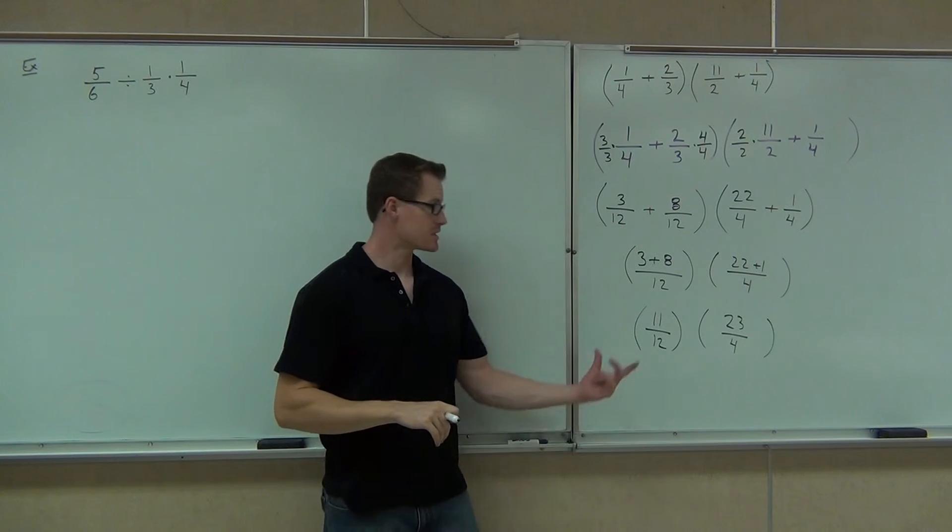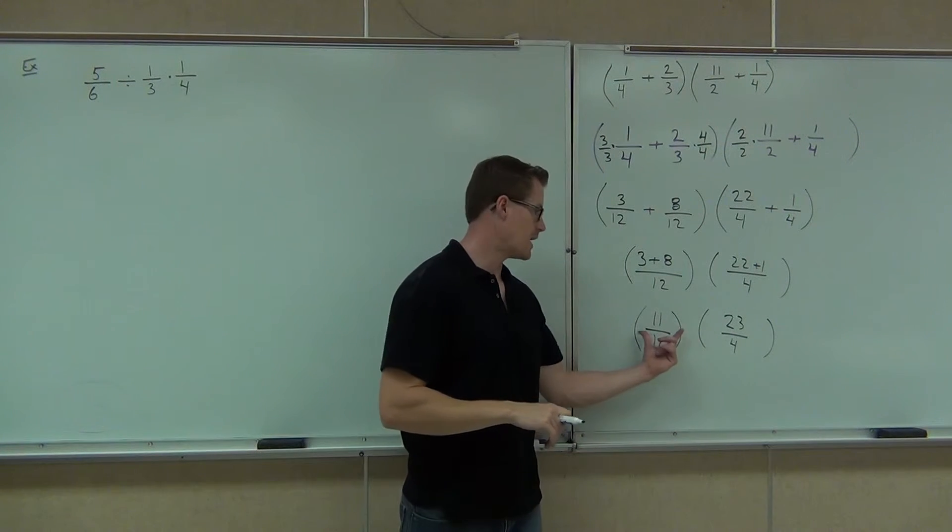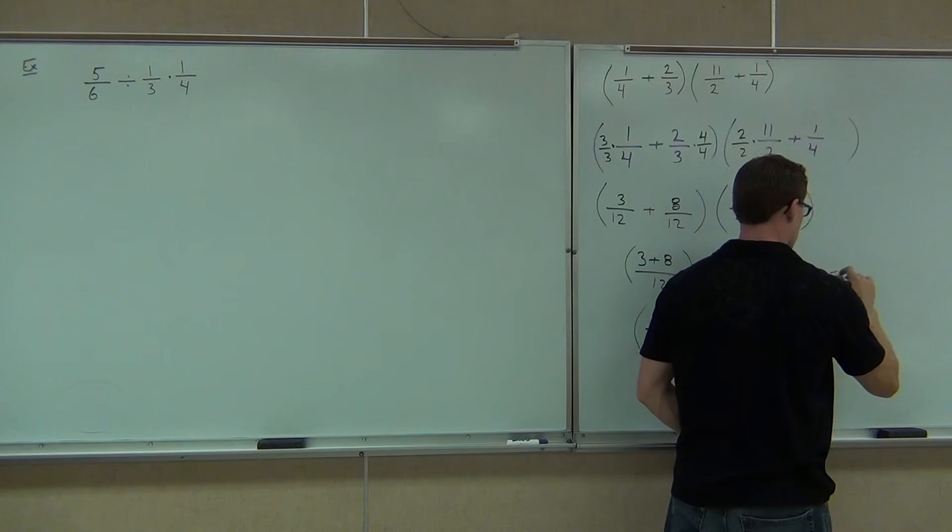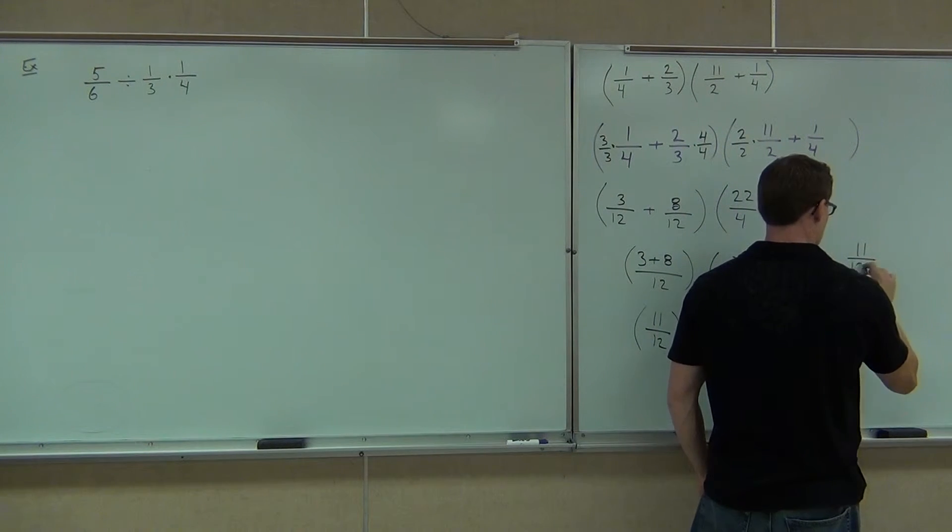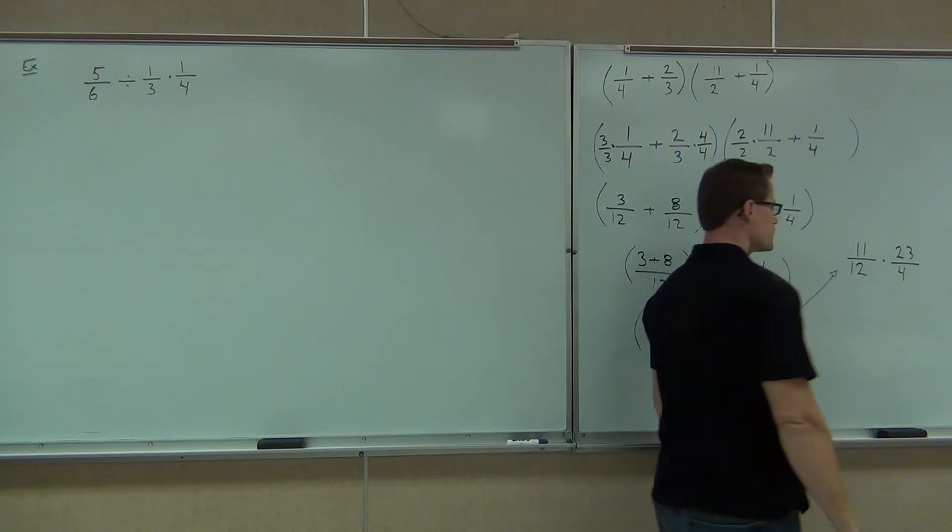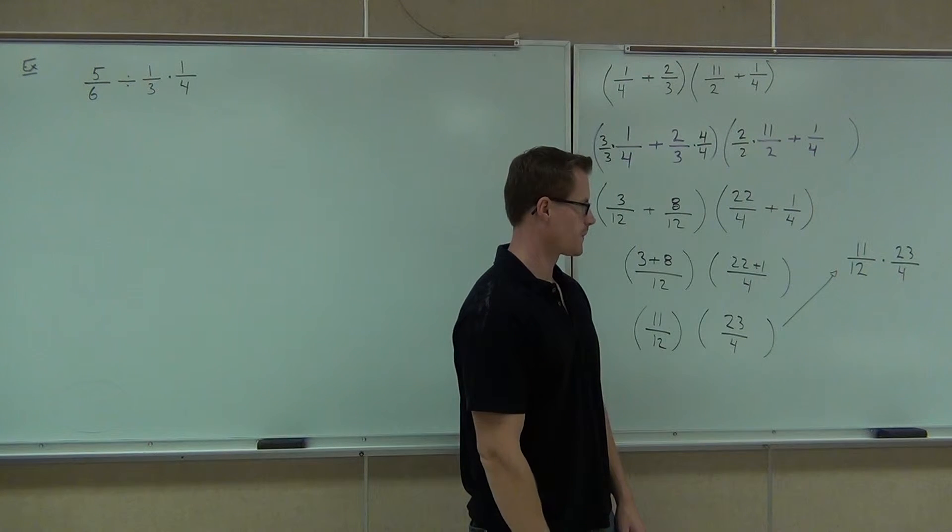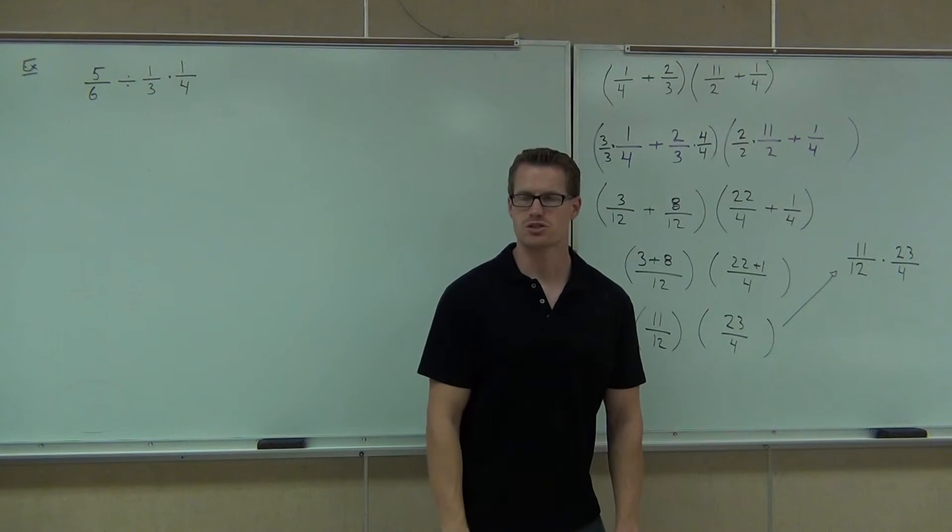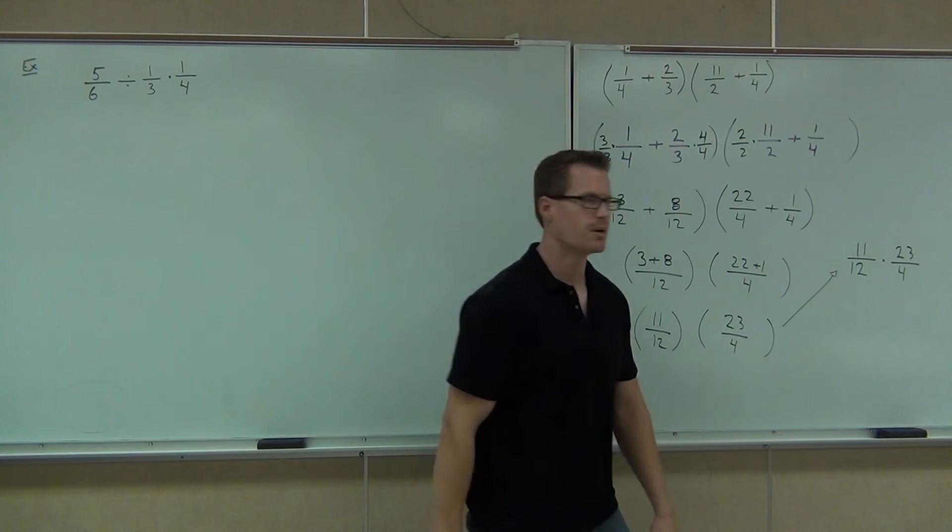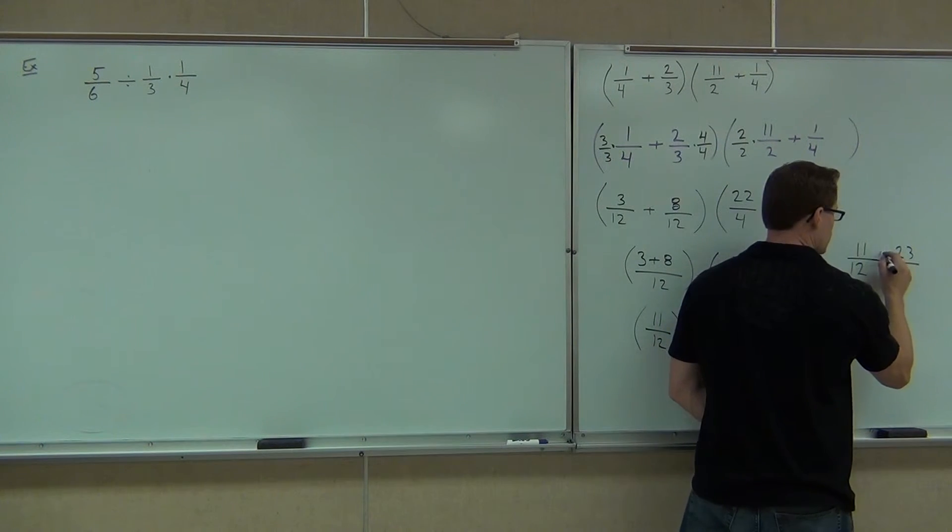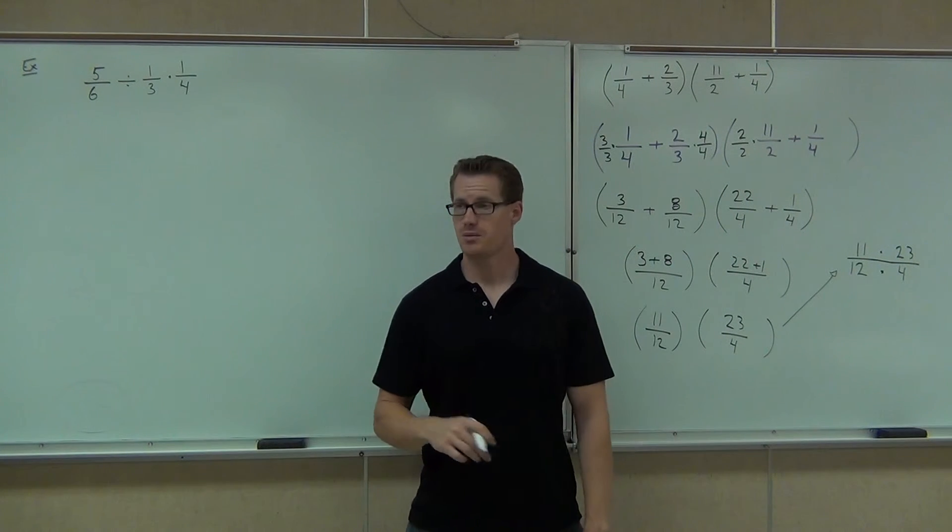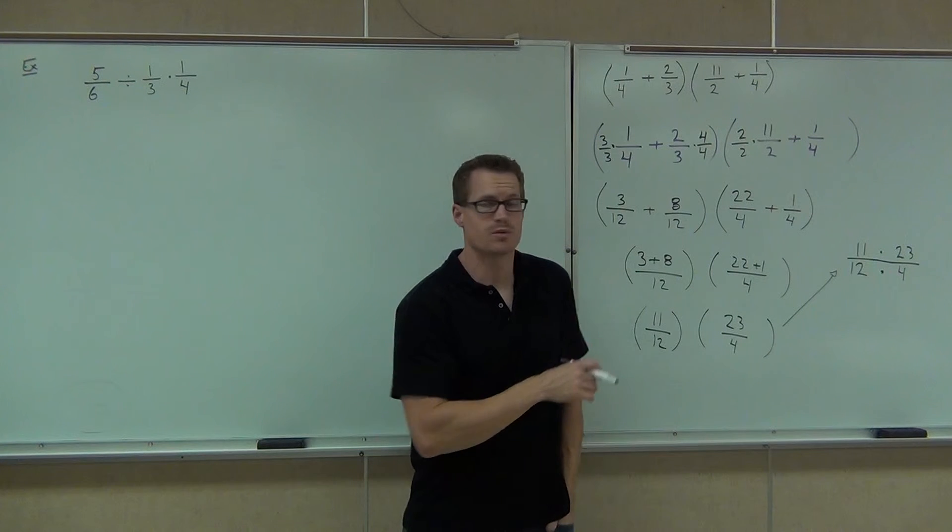If I multiply that by 2 over 2, I'm going to get 22 over 4, plus 1 over 4. That makes the LCD for us. That means we can add those fractions together now. Of course, we're going to get 22 plus 1 over 4, 23 over 4. Raise your hand if you were okay with this so far? Good deal. What now? Multiply.